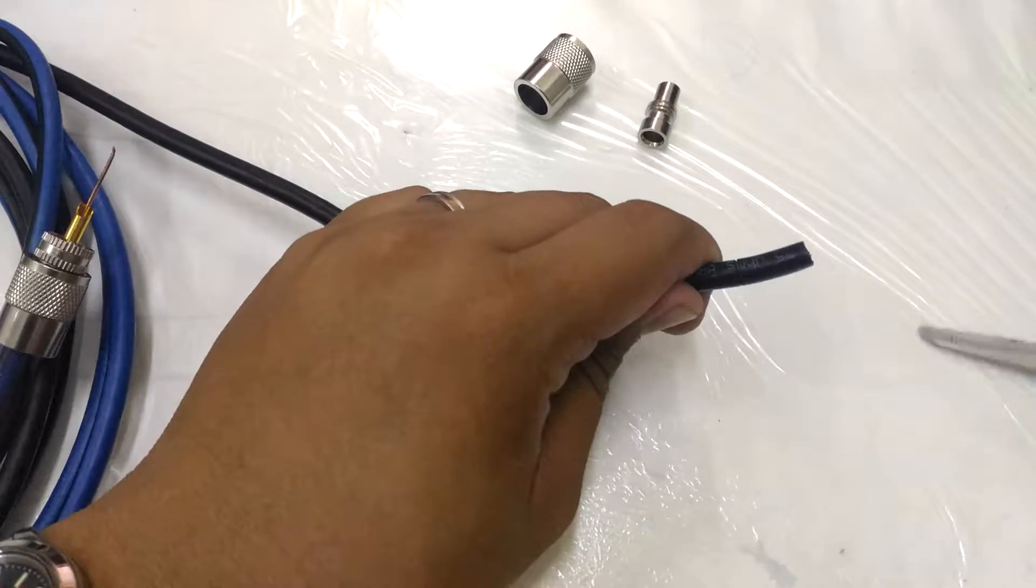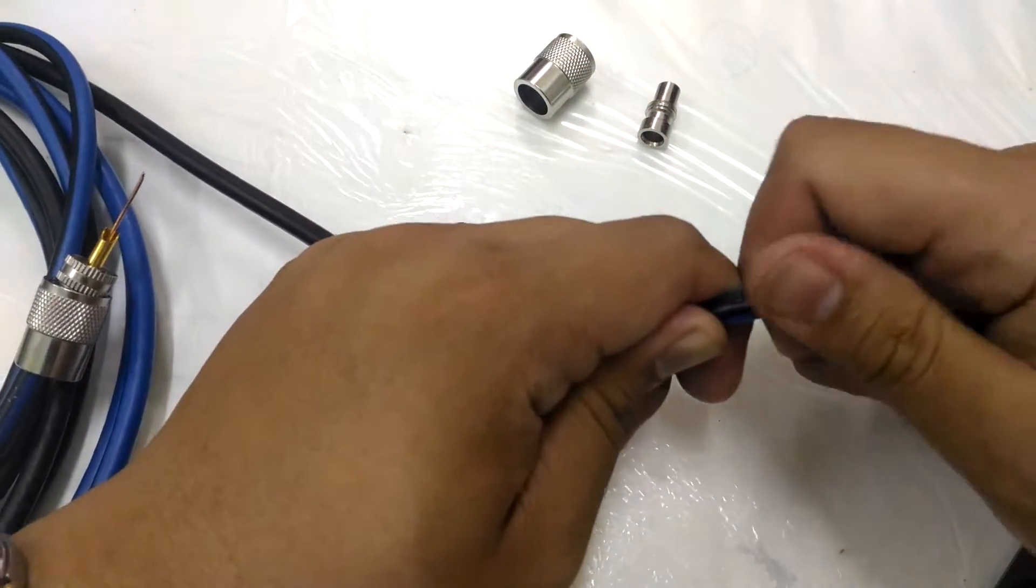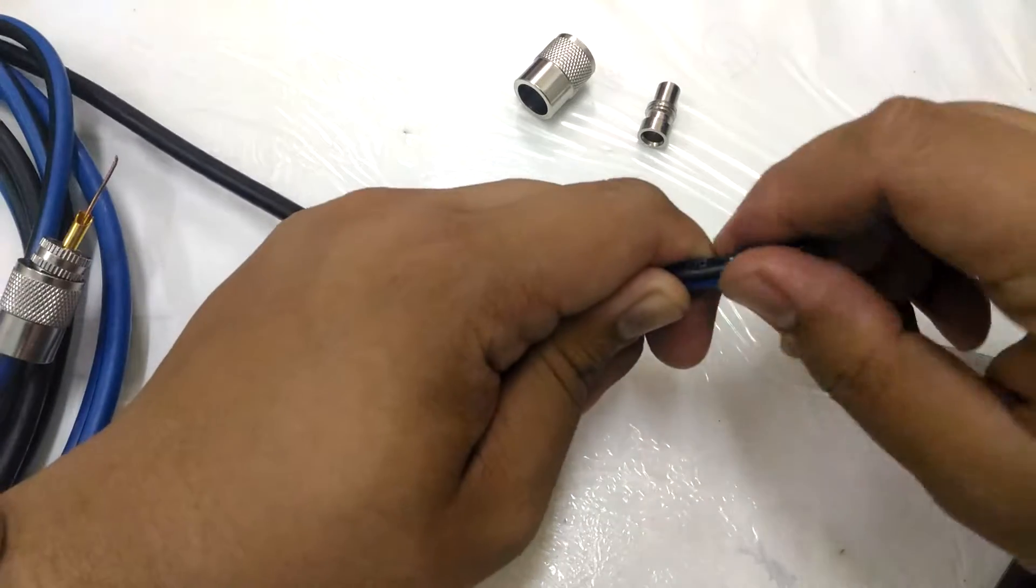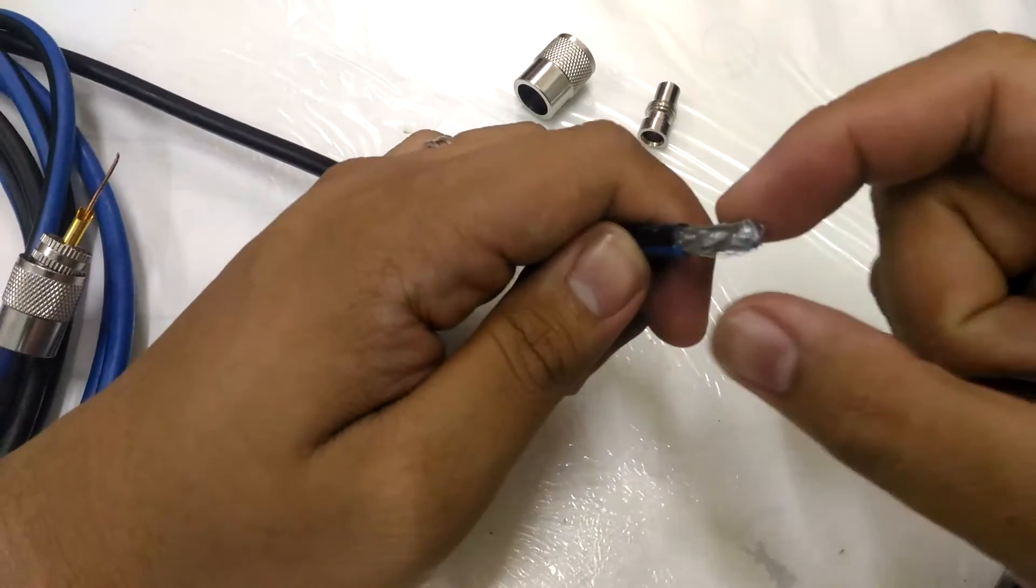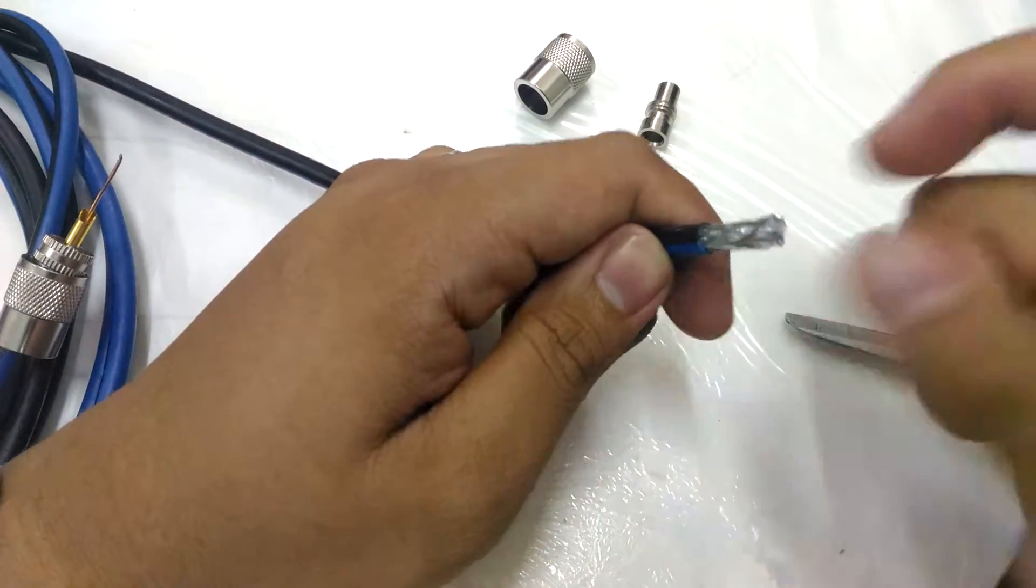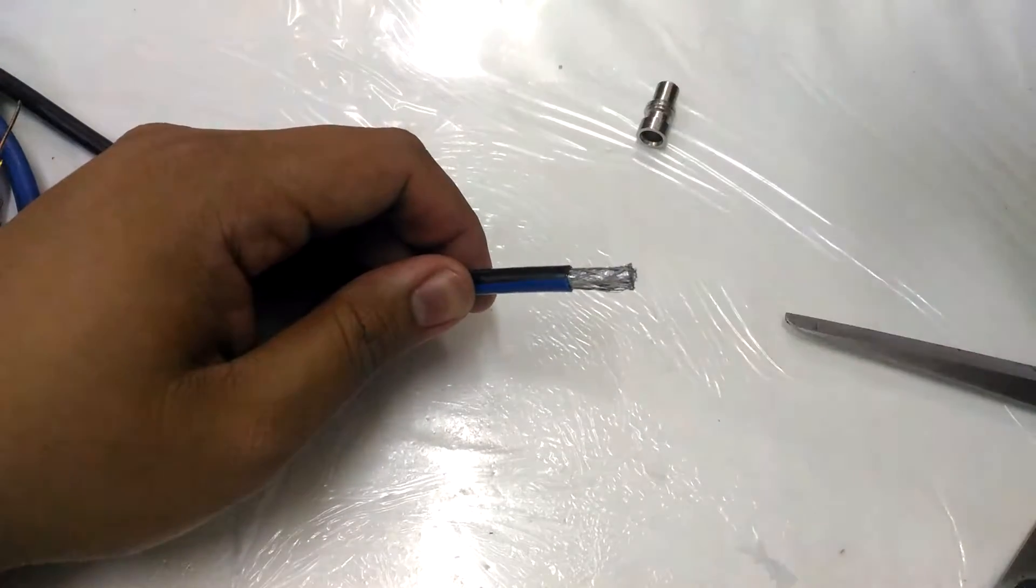It's a bit stubborn, so you slice it. Having a knife would be better. Then you reveal the braid on the outside.